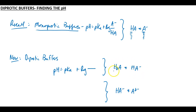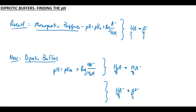Do you see that extra decision you have to make when working with diprotic buffers? Is the buffer prepared from the fully protonated and the intermediate forms? If it is, then you'll use pKa1, and the quotient would be HA minus over H2A. If the buffer were prepared from the intermediate form and the unprotonated form, the Henderson-Hasselbalch equation would be pH equals pKa2 plus the log of A2 minus over HA minus.